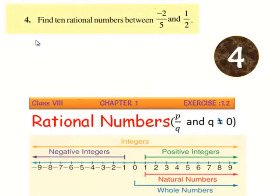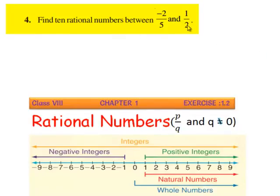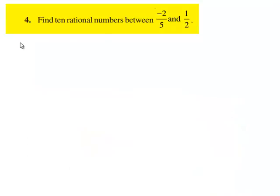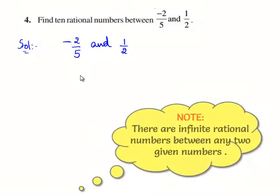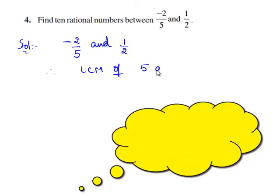Now, let us move on to the fourth question. The question given is: find 10 rational numbers between minus 2 by 5 and 1 by 2. Now, let us move on to the solution. The given two rational numbers are minus 2 by 5 and 1 by 2. Let us express these rational numbers with a common denominator. Therefore, we shall find the LCM of 5 and 2.